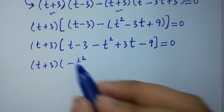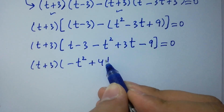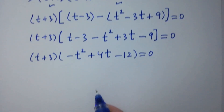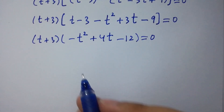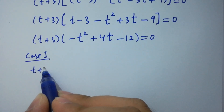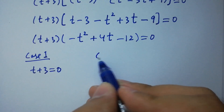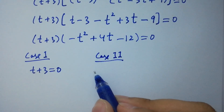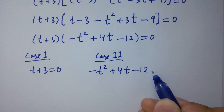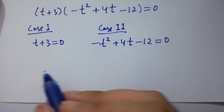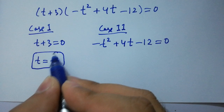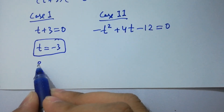Combining like terms: we get coefficients 3t plus 3t plus t giving 4t, and minus 3 minus 9 giving minus 12, so we have minus t-squared plus 4t minus 12 equal to 0. We have two cases. Case 1: t plus 3 equal to 0, giving t equal to minus 3, which is our first real solution.